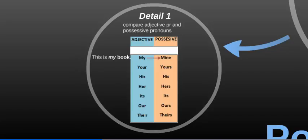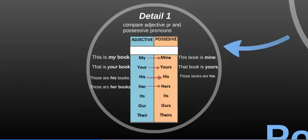So for example, this is my book, this book is mine. This is your book, that book is yours. Those are his books, those books are his. These are her books, those books are hers. This is its cover. This is our book, this book is ours. This is their book, this book is theirs.